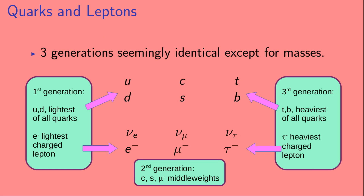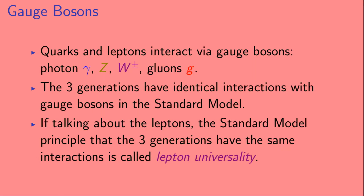As far as we know, these three generations are identical except for the masses of the particles. For example, the electron and the muon act identically except that they have different masses. Now, the quarks and leptons interact via the gauge bosons. The gauge bosons in the standard model are the photon (represented by the Greek letter gamma), the Z boson, the W plus and minus bosons, and the gluons (represented by the letter G). The three generations have identical interactions with the gauge bosons in the standard model. Specifically, for the leptons, this principle is called lepton universality.